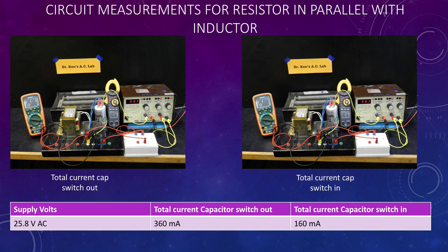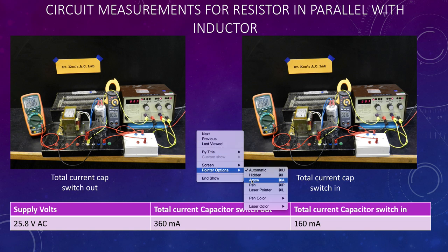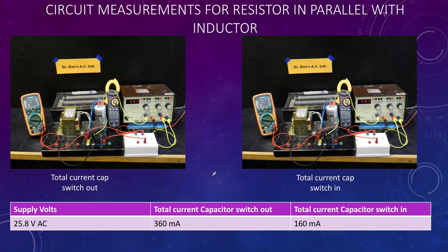The important thing here is we're going to look at our readings. On the left-hand screen we have the total current with the capacitor switched out, so if you look at our ammeter here, we have 360 milliamps, so that's where this reading comes from.